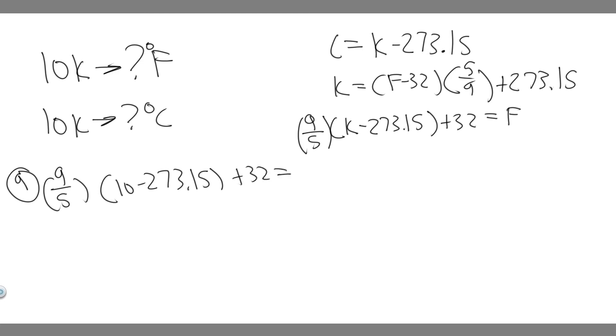So go ahead and do this. 10 minus 273.15, multiply by 9 over 5, and then add 32. And you're going to find that it equals minus 441.67 degrees Fahrenheit. So this is your answer to A, minus 441.67 degrees Fahrenheit.